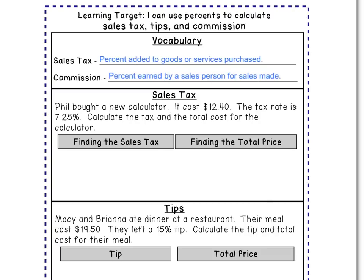In Wichita, it's 7.15%, so you'd actually save a dollar by shopping in Wichita at this time. Sales tax is a percent added to goods or services purchased. That sales tax often goes towards schools, road improvements, and all sorts of different things.